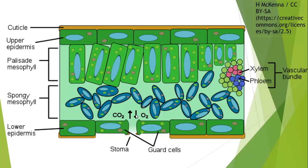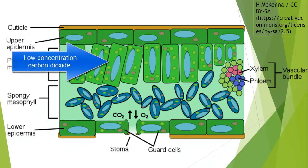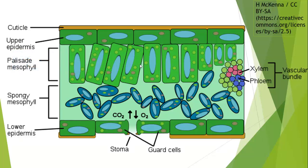Not only do plants need to get hold of CO₂ for photosynthesis, but the O₂ they produce needs to leave, and that will diffuse out through the stoma. This is all by diffusion — all on concentration gradients. As the palisade mesophyll cells use CO₂ in photosynthesis, the concentration of carbon dioxide becomes lower in that region, so carbon dioxide diffuses in down a concentration gradient from high to low concentration.